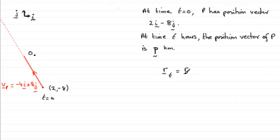is equal to the position vector of that particle at time 0 plus t lots of the velocity vector.